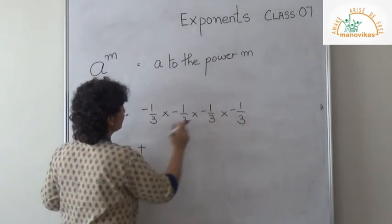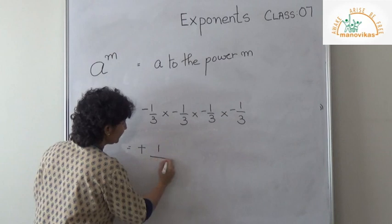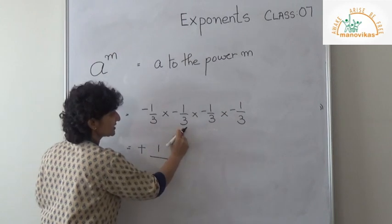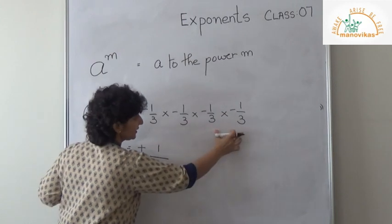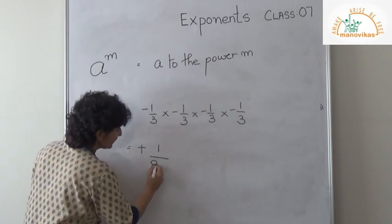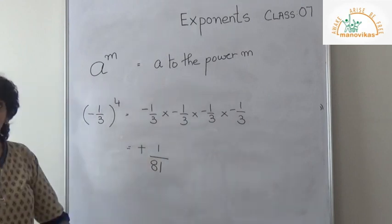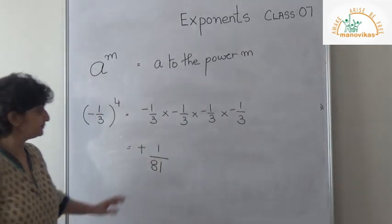All I need to do is multiply: numerator is 1, and the denominator — 3 threes are 9, then 9 nines are 81. So the answer is 1 upon 81.